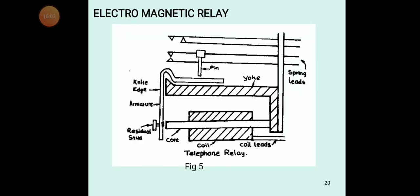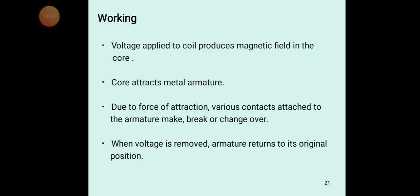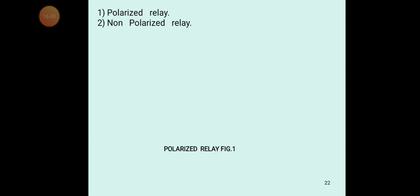The working of the electromagnetic relay: voltage applied to the coil produces a magnetic field in the core. The core attracts the metal armature. Due to the force of attraction, various contacts attached to the armature make, break, or change over. When voltage is removed, the armature returns to its original position. When voltage is not removed, it remains energized and acts as a magnet.